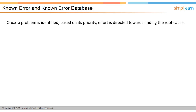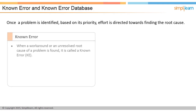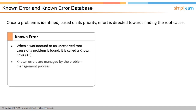Once a problem is identified, based on its priority, effort is directed towards finding the root cause. A temporary fix or a workaround might be used to restore services to a usable level in the meantime. The moment a workaround or an unresolved root cause to the problem is found, it becomes a known error, and IT services are aware of the issue.